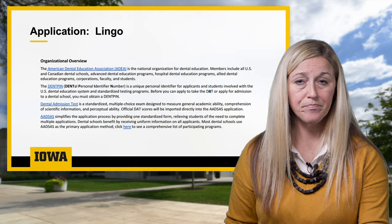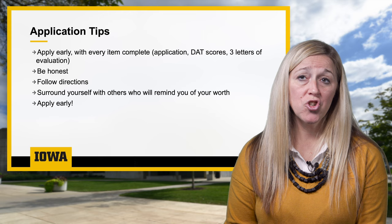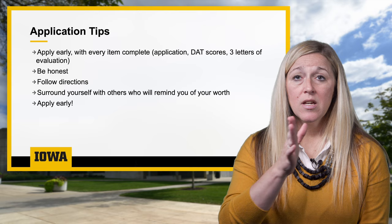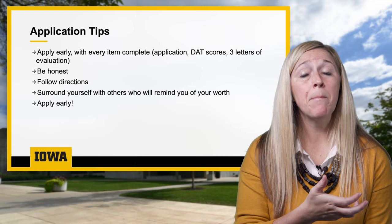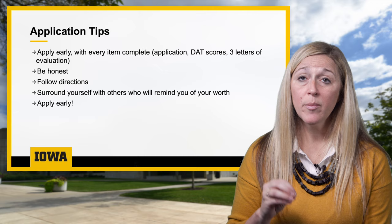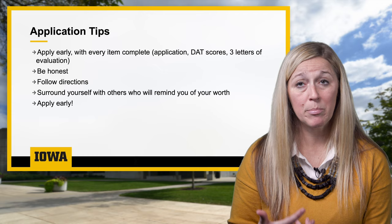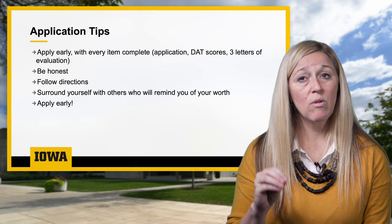Some application tips: I highly suggest that you apply early. Every June is when the application opens for submission. ADSAS first becomes available to applicants in mid-May, giving you a few weeks to upload your information and read through it thoroughly. The average application is anywhere from 30 to 60 pages in length — it's a beast to complete. I suggest that when the submission date arrives, you are ready and submit on day one if you're able.